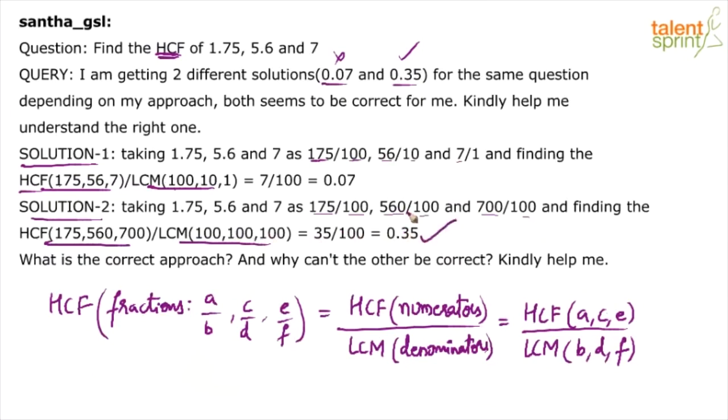But like I said, this is correct and this is wrong. Now, why is it so? Why is this wrong? Understand, when you are dealing with such problems, 1.75, 5.6, 7, you should ensure that the number of decimal places are equal. The challenge here, the reason why you are getting two different answers, Santha, is because 1.75 has got two decimal places, 5.6 has got only one decimal place, and 7 has got zero decimal places.